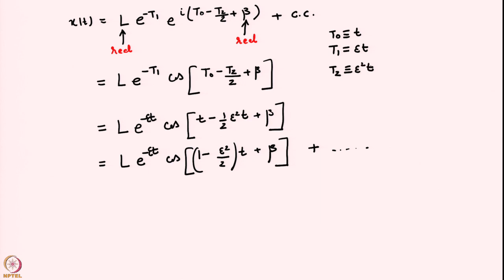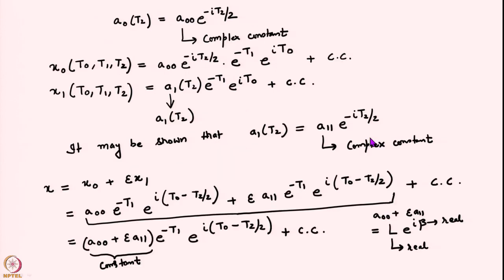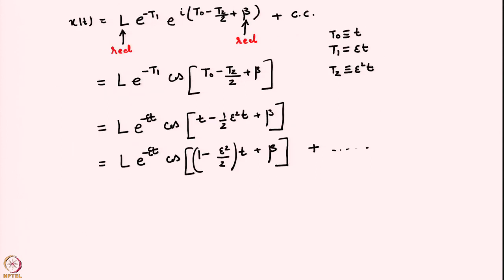Note that this is not completely the solution up to order ε² — we would have to add an ε²·x2 part for full consistency — but the basic purpose of this exercise was to demonstrate what multiple scales is doing. The method gives an answer that will not become disordered in time, and the process itself eliminates all resonant forcing terms, so there are no secular terms.